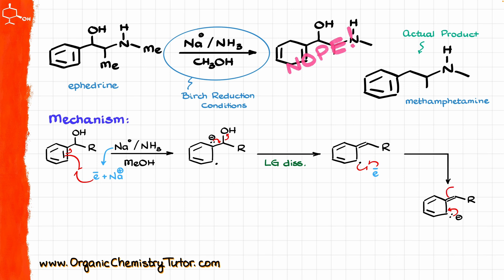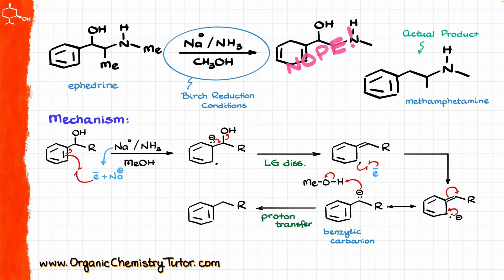That is going to be the one where the negative charge is actually sitting in the benzylic position — so we have the benzylic carbanion. The last thing that's going to happen is methanol is going to be the source of our proton, so methanol is going to come in and provide this proton for our anionic species, giving us the following product.